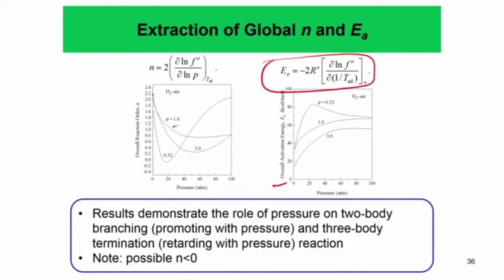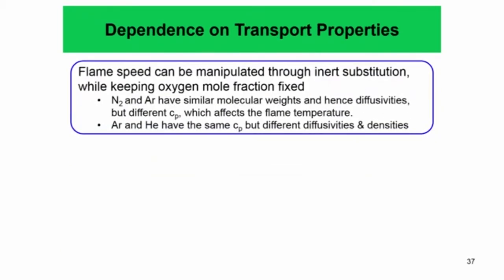We can also find out the overall global activation energy for the whole hydrogen-air reaction using this formula. These results demonstrate the role of pressure on two-body reactions and three-body reactions — it is not possible with n less than 0. The two-body branching reactions are promoted with pressure while three-body reactions are not promoted in the same way. The actual behavior comes from the fact that reaction rate increases with pressure causing the increase in burning flux, whereas the flame speed reduces with pressure purely due to density effects and not due to reactions.